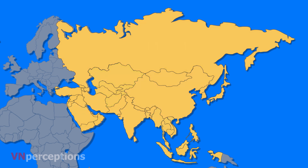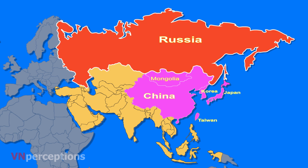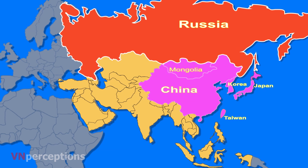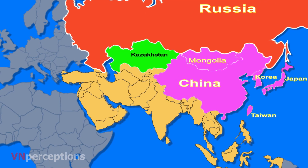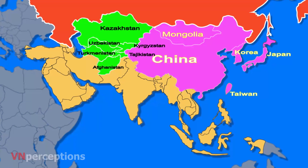In East Asia, we have countries like China, North and South Korea, Japan, Taiwan, and Mongolia. In North Asia, we have Russia. In Central Asia, the countries are Kazakhstan, Uzbekistan, Kyrgyzstan, Tajikistan, Turkmenistan, and Afghanistan.